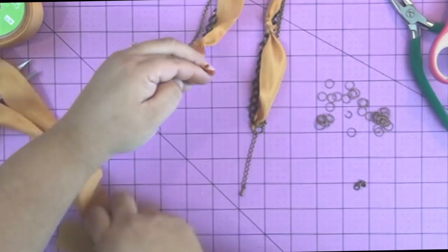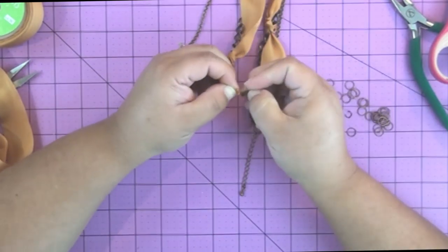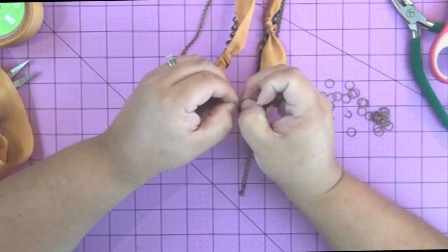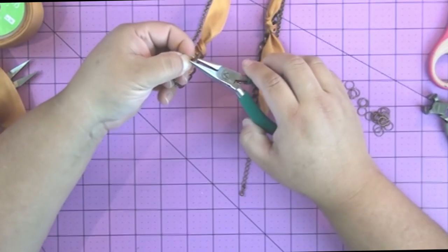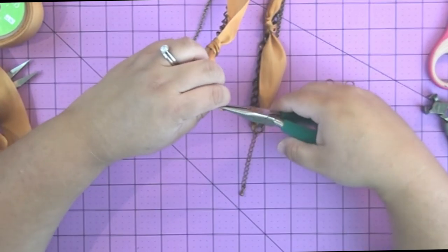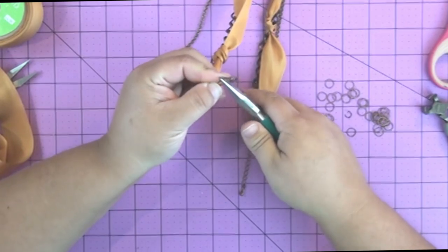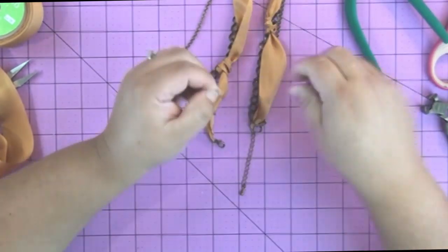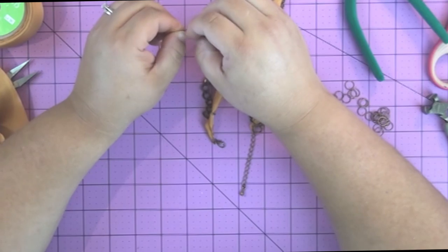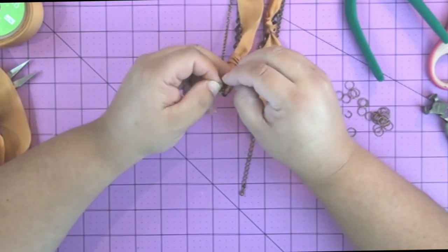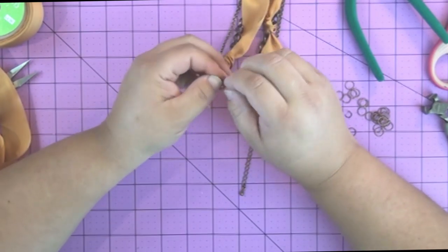So again, I repeated it on the other side. I used some Westcott scissors to cut the ribbon because they're really sharp, and I didn't want it to fray a lot. Silk ribbon can fray really easily, so I wanted a nice, sharp cut. Then I put the little crimp bead on, again using jump rings to attach those two pieces of chain to the little hole in the crimp bead.